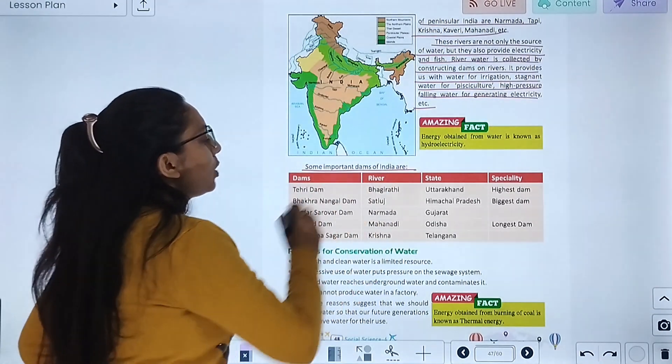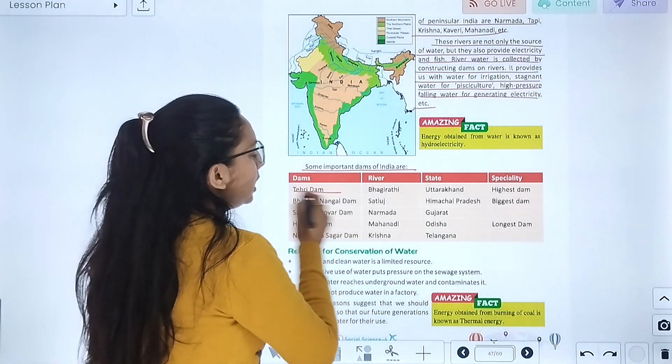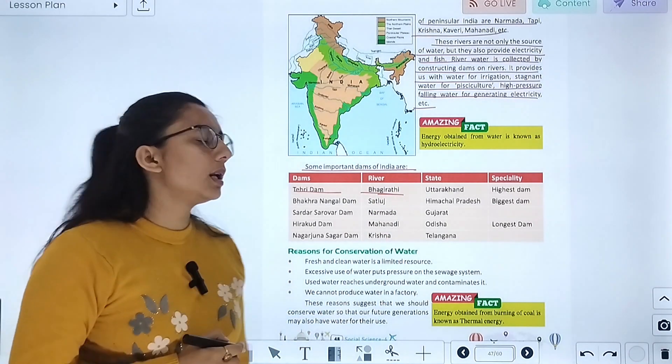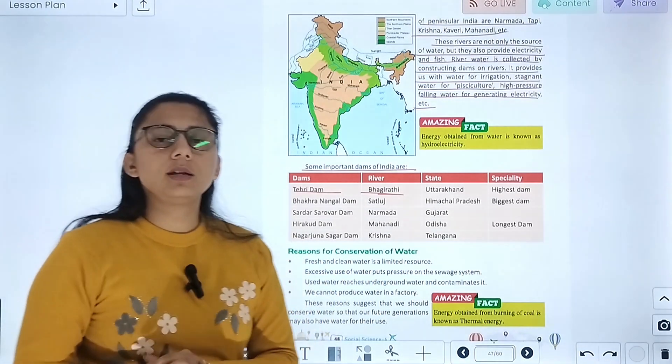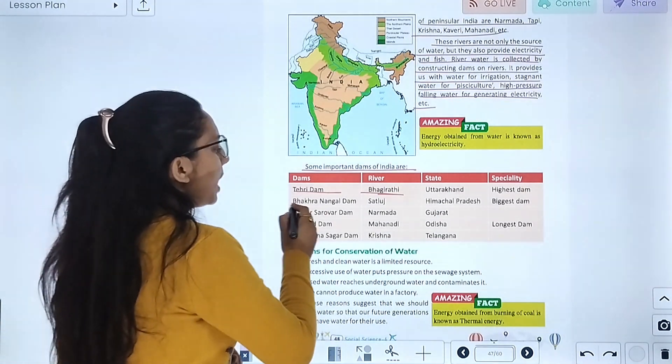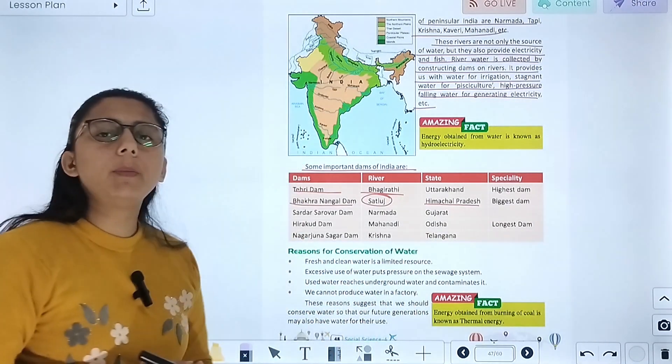Some important dams of India: Tehri dam is located on Bhagirathi river. This is the highest dam. Bhakra Nangal dam is found in Himachal Pradesh on Sutlej river. It is the longest dam.